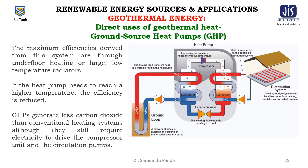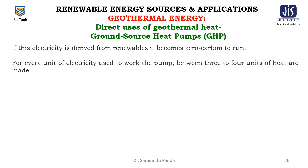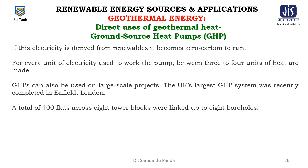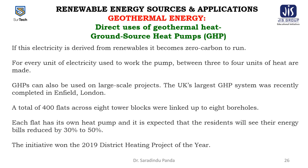GHPs generate less carbon dioxide than conventional heating systems, although they still require electricity to drive the compressor and circulation pumps. If this electricity is derived from renewables, it becomes zero carbon to run. For every unit of electricity used to run the pump, between three to four units of heat are produced. GHPs can also be used on large-scale projects — the UK's largest GHP system was recently completed in Enfield, London, where 400 flats across 8 tower blocks were linked to 8 boreholes. Each flat has its own heat pump, and residents are expected to see energy bills reduced by 30 to 50 percent. The initiative won the 2019 district heating project of the year.